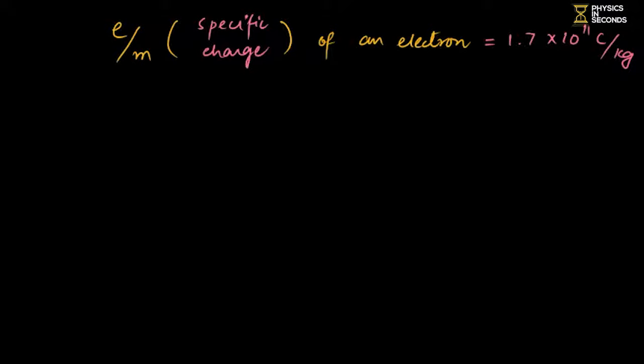The answer still comes out as 1.7 × 10¹¹ coulomb per kilogram. Regarding the experiment: we had a Gas Chamber with a Uniform Magnetic Field inside it.